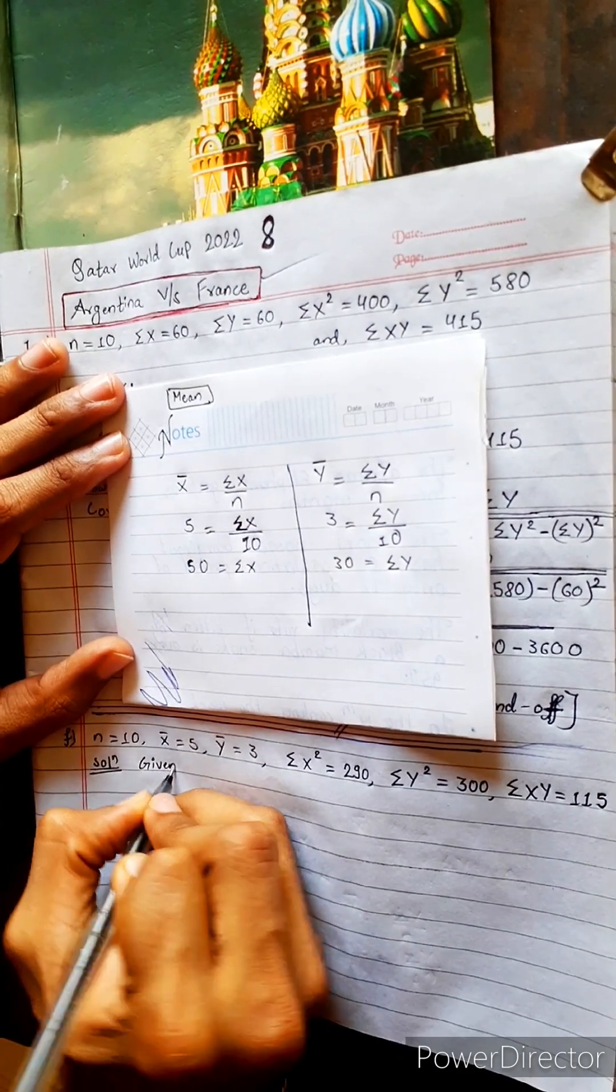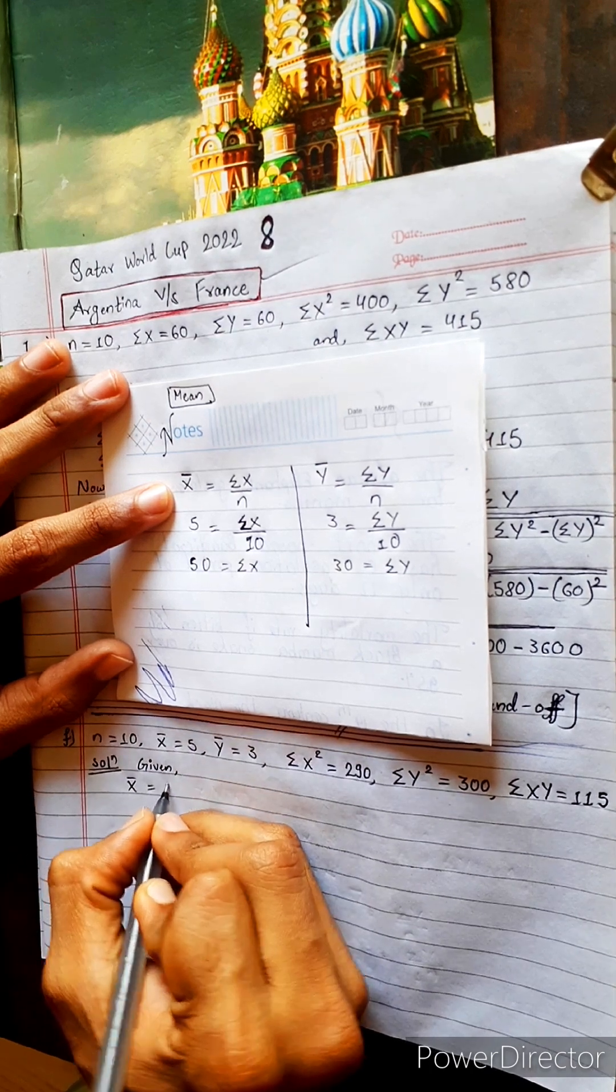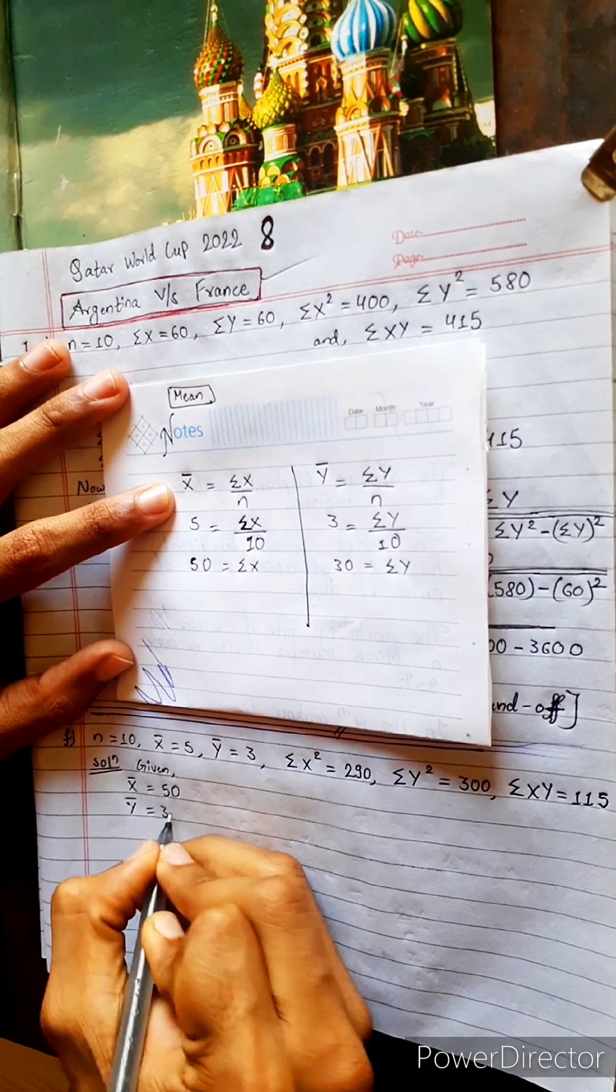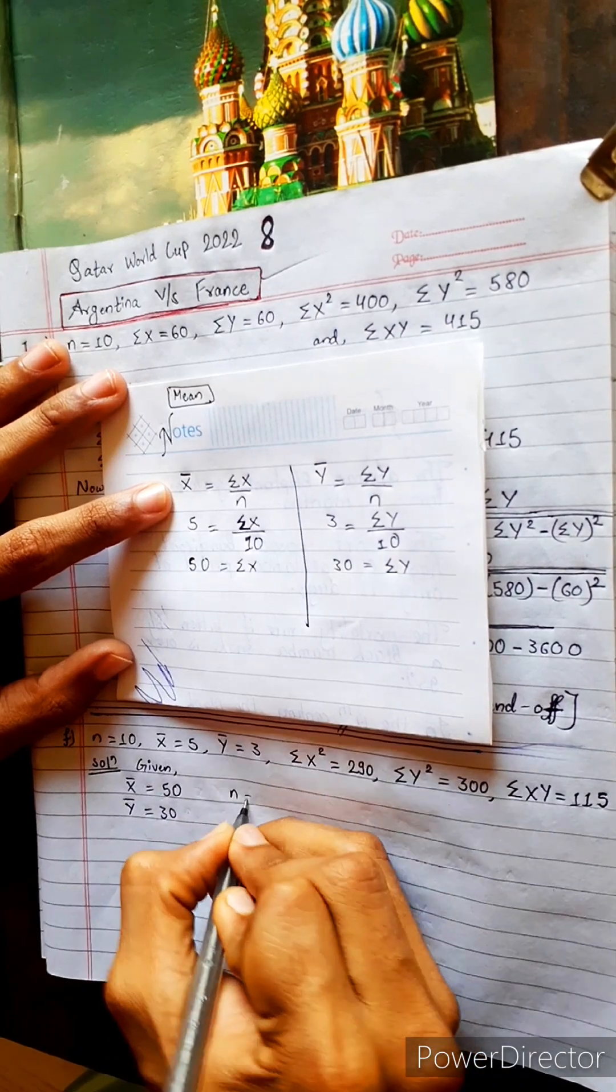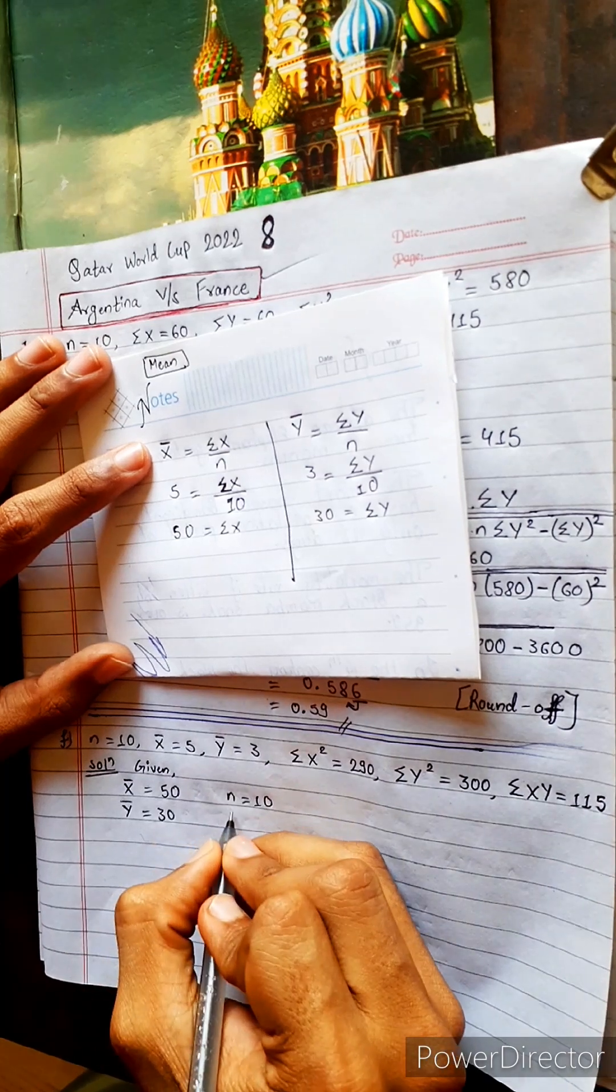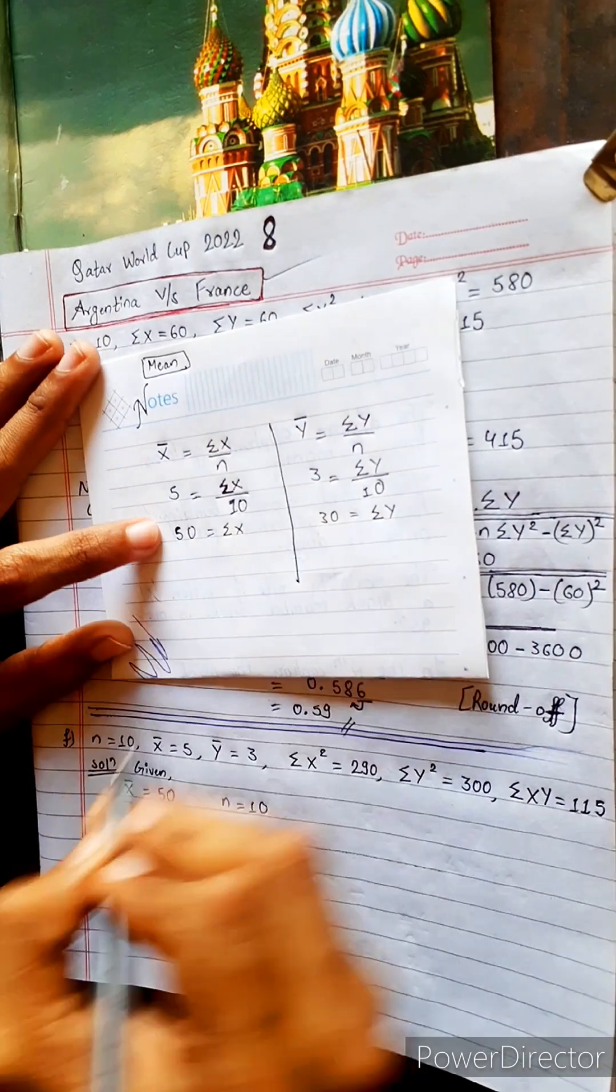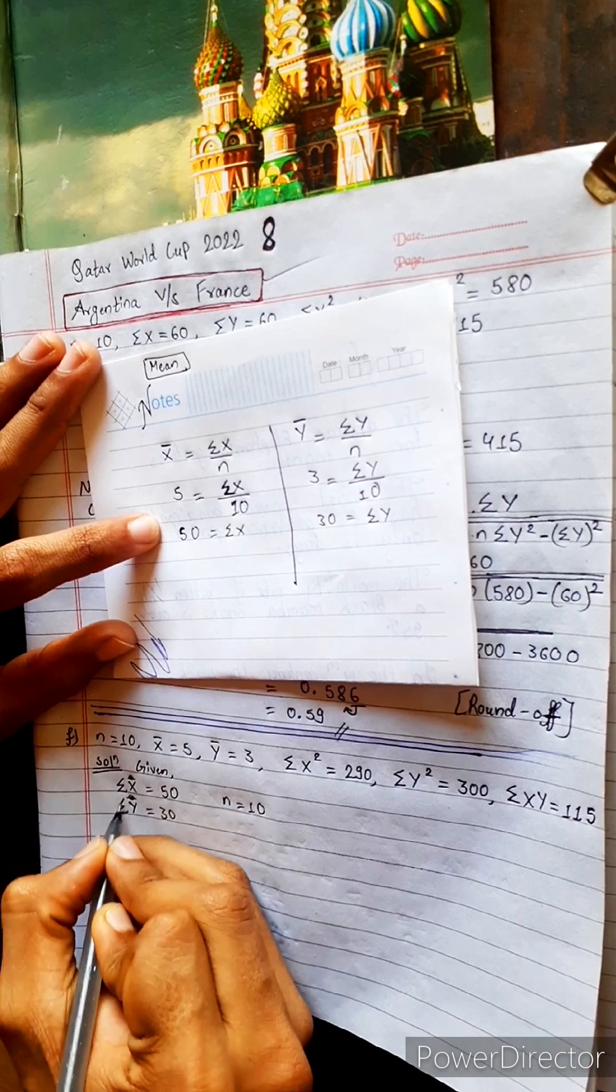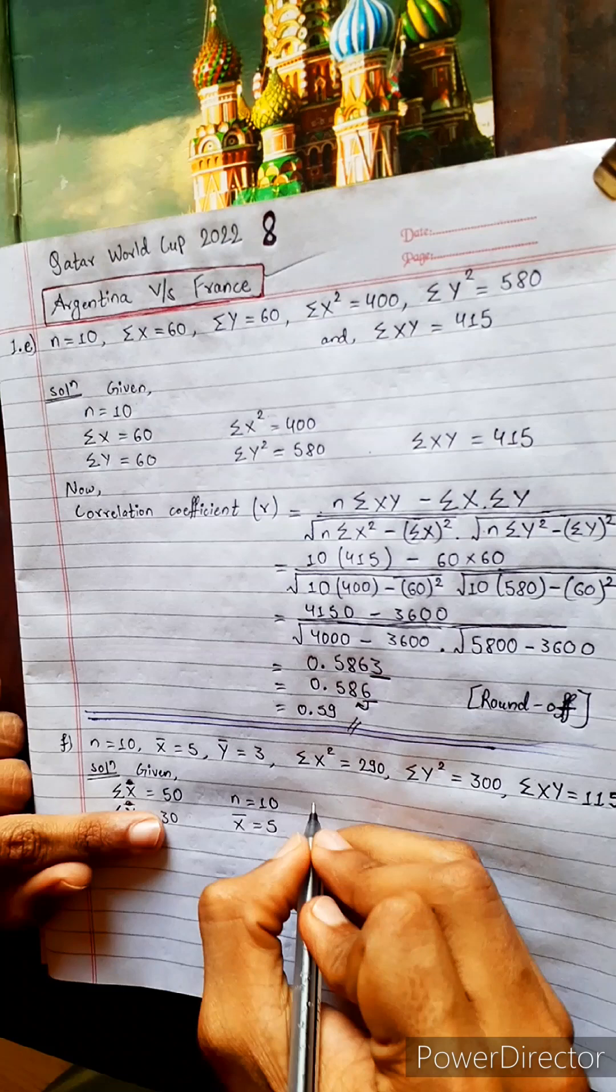Then copy here, write: given x bar equals to 50, y bar equals to 30, and also n is 10. Then write this, well, what I write here: 50, this is summation x. You foolish, sorry, me foolish. Equals to 5, y bar equals to 3.